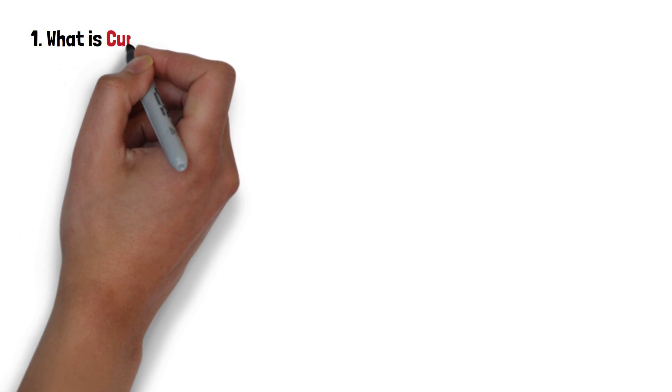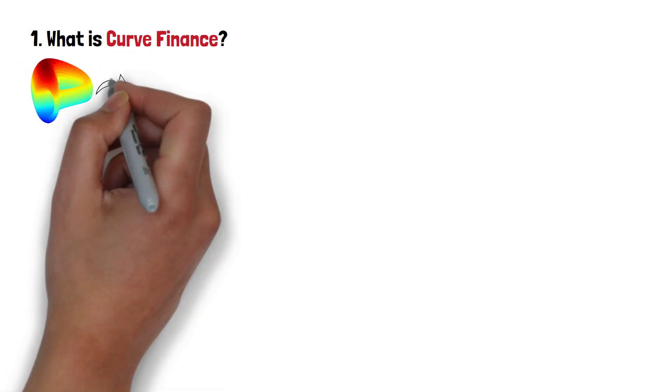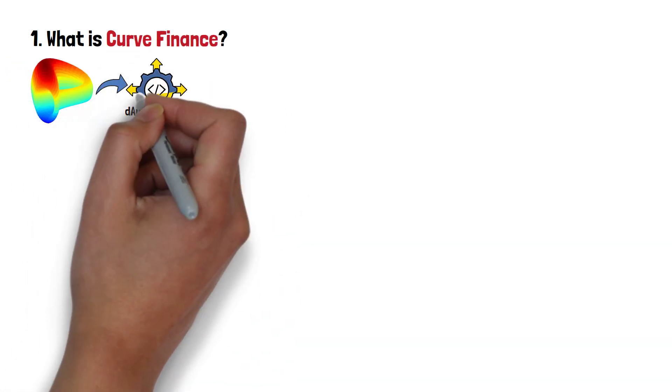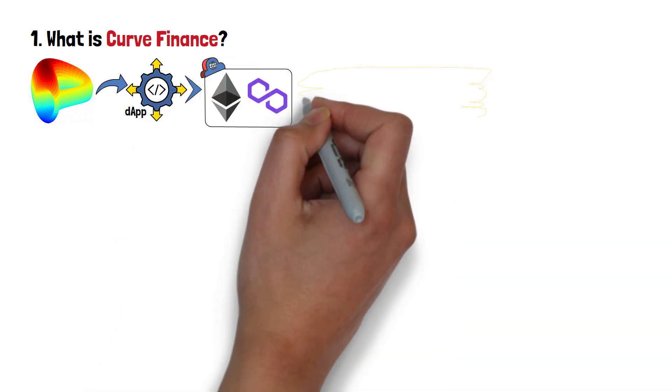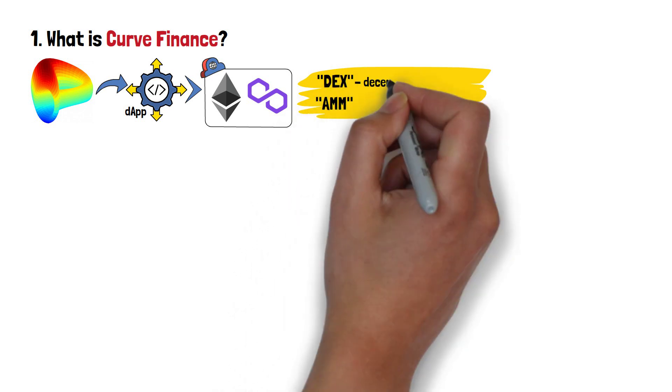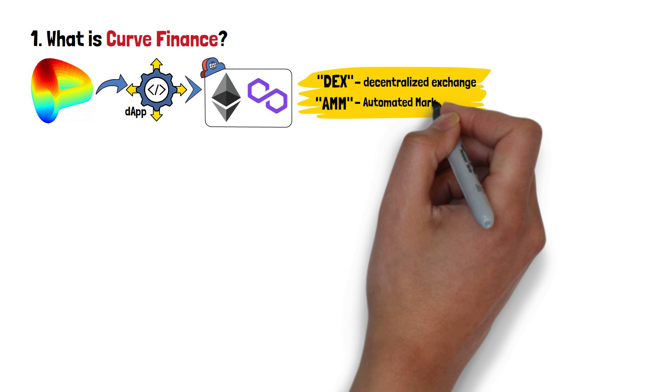So, let's take it from the top. What is Curve Finance? Essentially, Curve Finance is a dApp, a decentralized application that's based on the Ethereum and Polygon networks. To be more specific, however, Curve is often referred to as a DEX, or an AMM, a decentralized exchange, or an automated market maker, respectively.